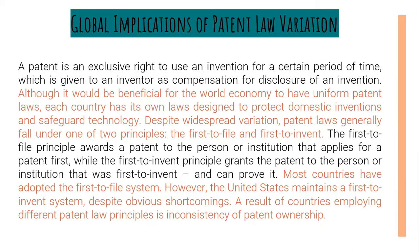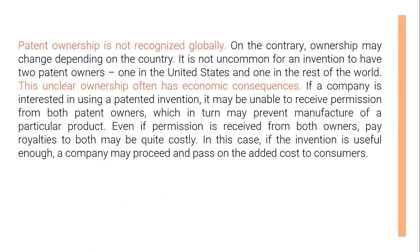However, the United States maintains a first-to-invent system, despite obvious shortcomings. A result of countries employing different patent law principles is inconsistency of patent ownership. Patent ownership is not recognized globally; on the contrary, ownership may change depending on the country. It is not uncommon for an invention to have two patent owners — one in the United States and one in the rest of the world. This unclear ownership often has economic consequences. If a company is interested in using a patented invention, it may be unable to receive permission from both patent owners, which in turn may prevent manufacture of a particular product.